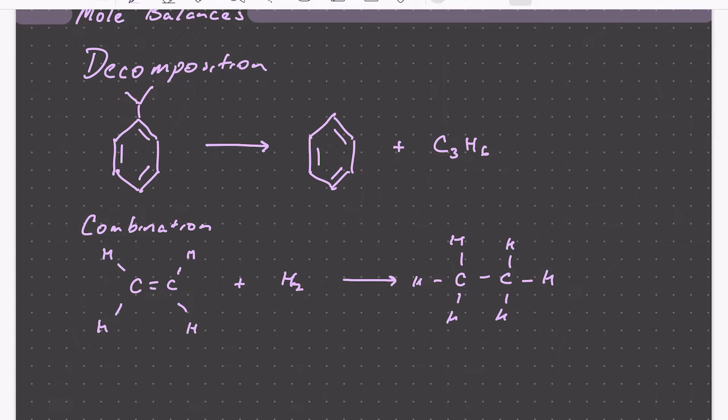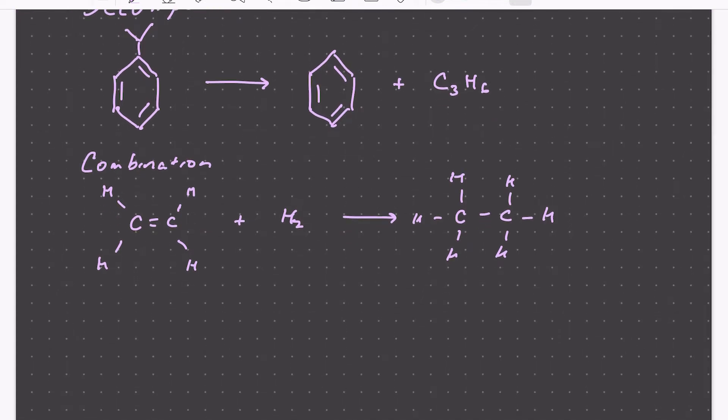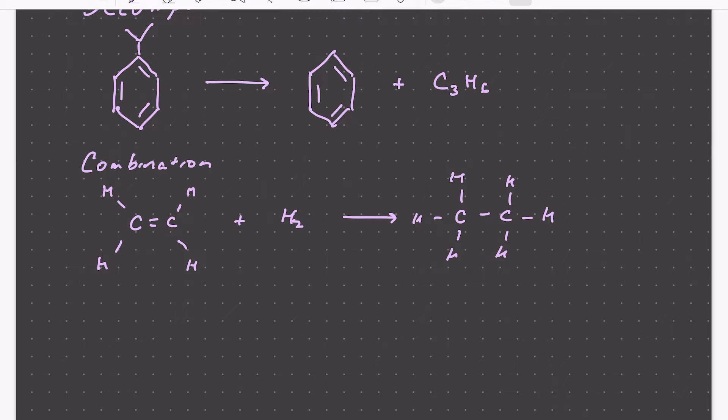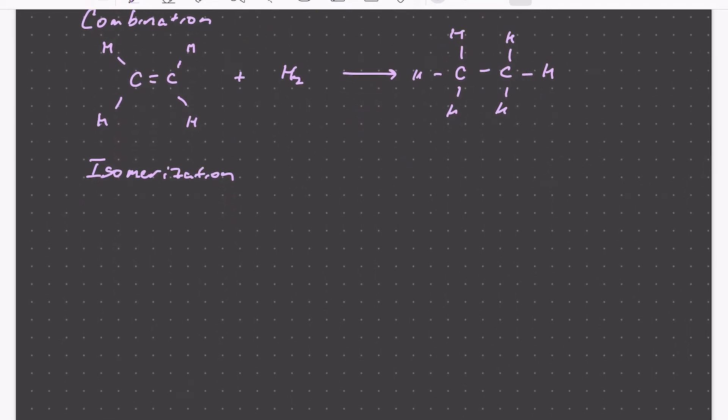And then finally we could have reactions that don't change the stoichiometry of our starting material A, but instead change just the structural arrangement of atoms in the molecule. So these would be isomerization reactions. An example would be if our molecule A is this linear hydrocarbon normal butane, we could transform A into a different species just by rearranging the carbon and hydrogen atoms in the molecule to form something like isobutane.